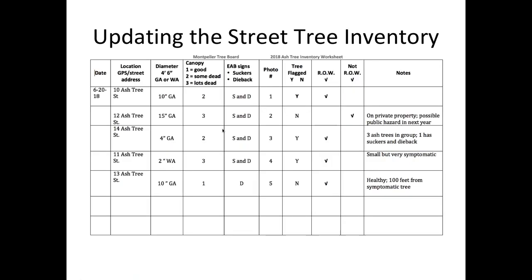This is the worksheet volunteers are going out with to collect minimum data — they record diameter only for trees greater than four inches, with GA standing for green ash and WA for white ash.